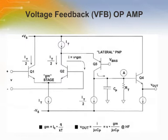A voltage feedback or VFB op-amp is distinguished from a current feedback or CFB op-amp by circuit topology. The VFB op-amp is certainly the most popular in low frequency applications, but the CFB op-amp has some advantages at high frequencies. We will discuss CFB in detail later, but first the more traditional VFB architecture. Early IC voltage feedback op-amps were made on all NPN processes, optimized for NPN transistors, while lateral PNP transistors had relatively poor performance and were generally only used as current sources, level shifters, or for other non-critical functions.